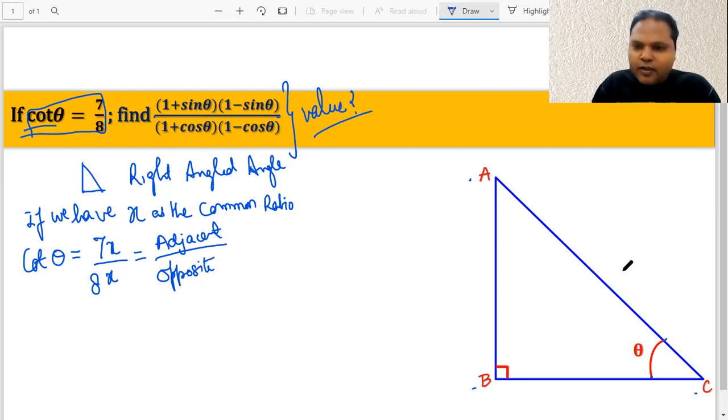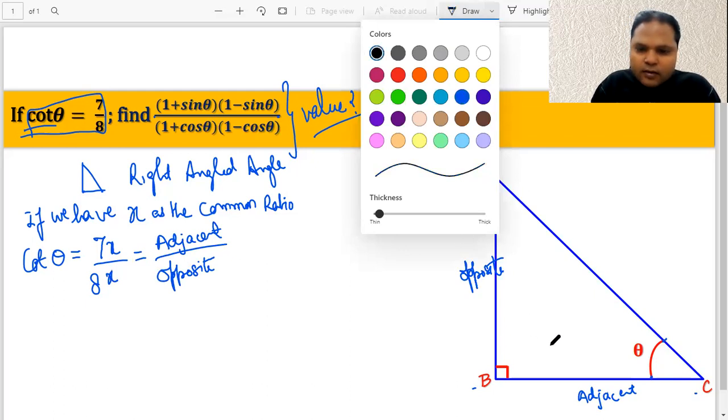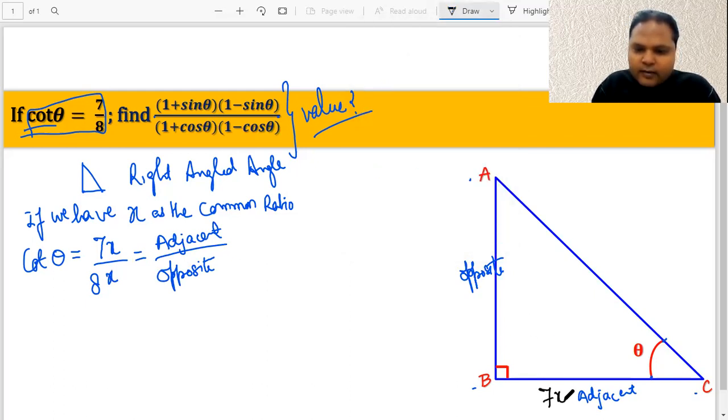Now in this particular triangle, if we really look at the adjacent - since we are talking about theta as this angle - then that means the adjacent is going to be this, and this one is going to be the opposite, which means that we can say that this is 7x and this is 8x. And now we will apply the Pythagoras theorem.